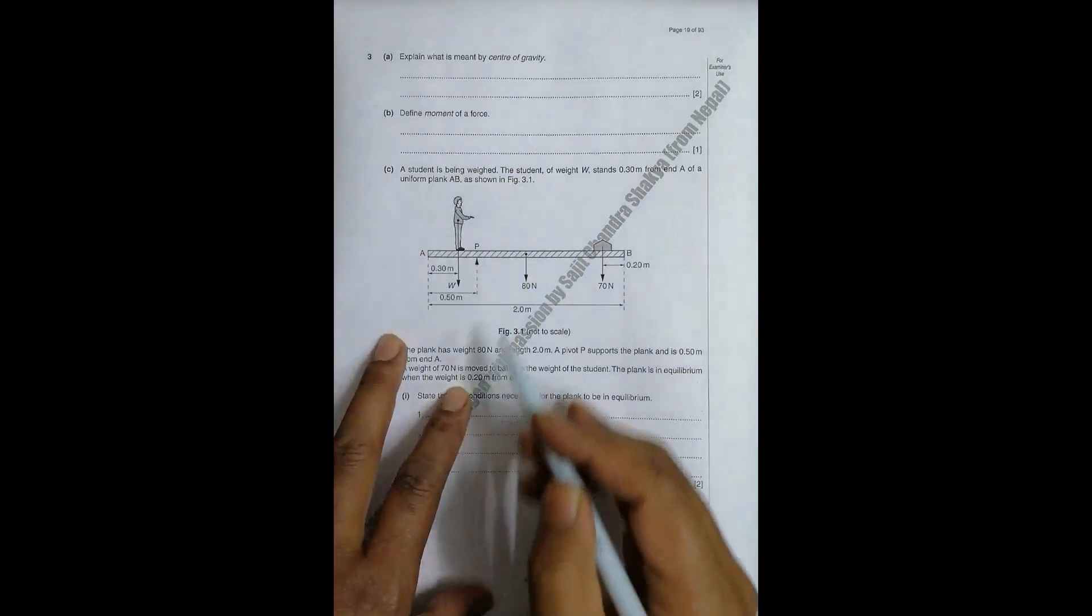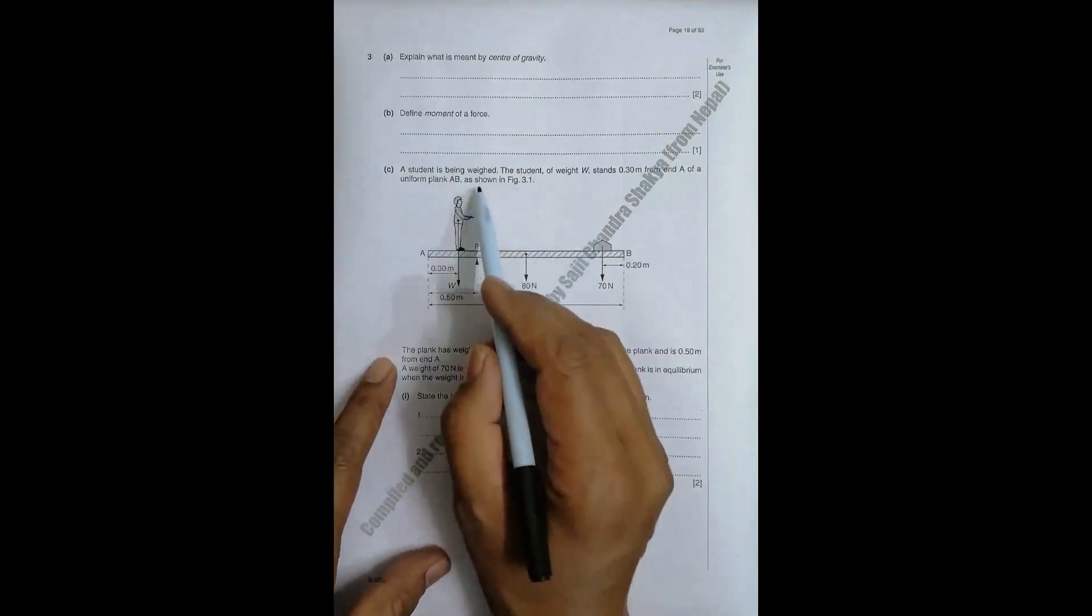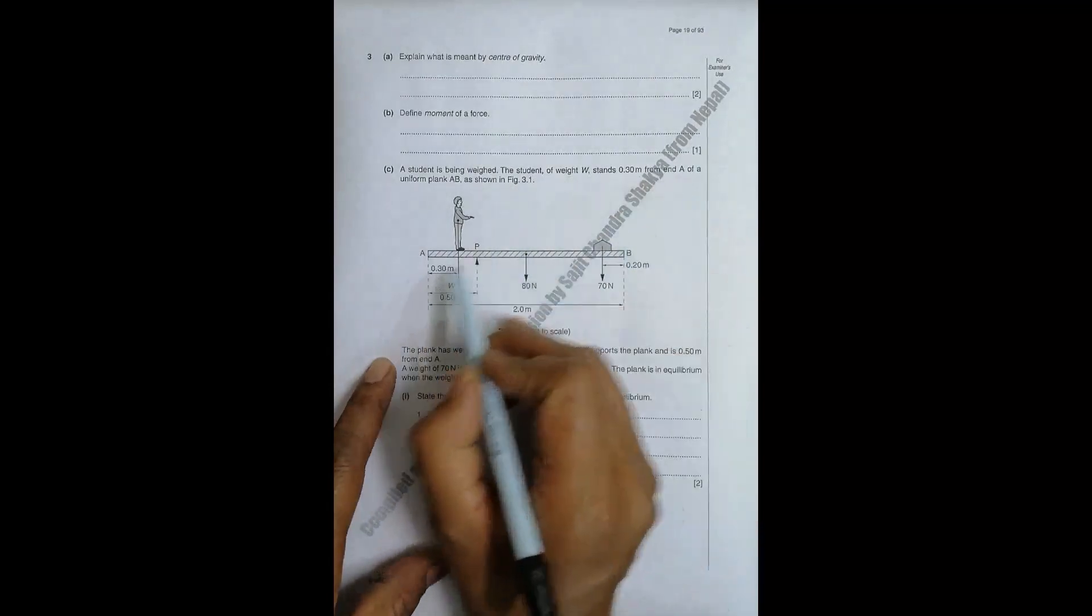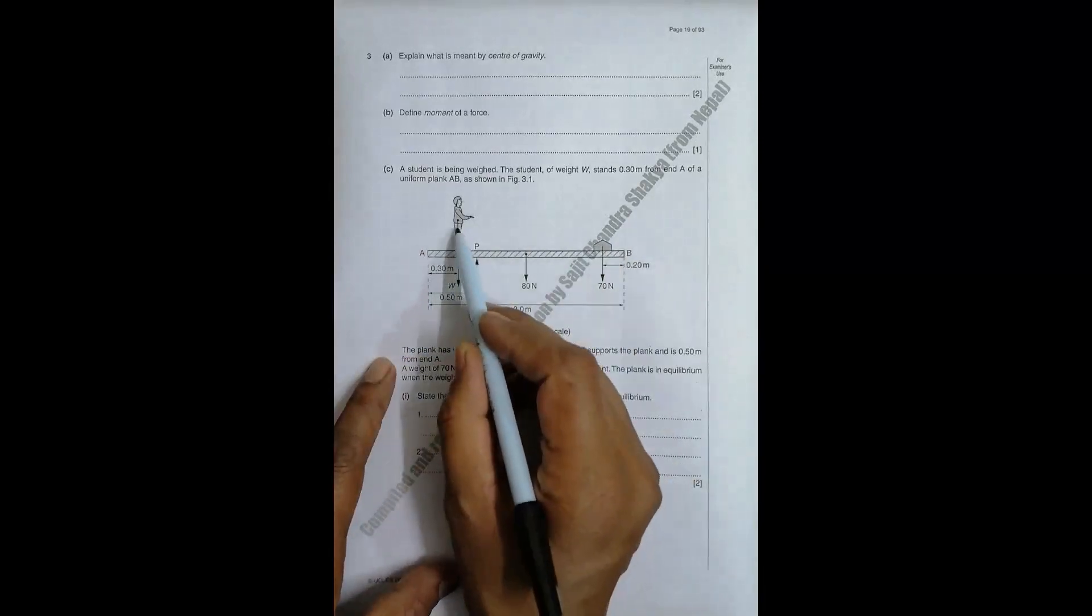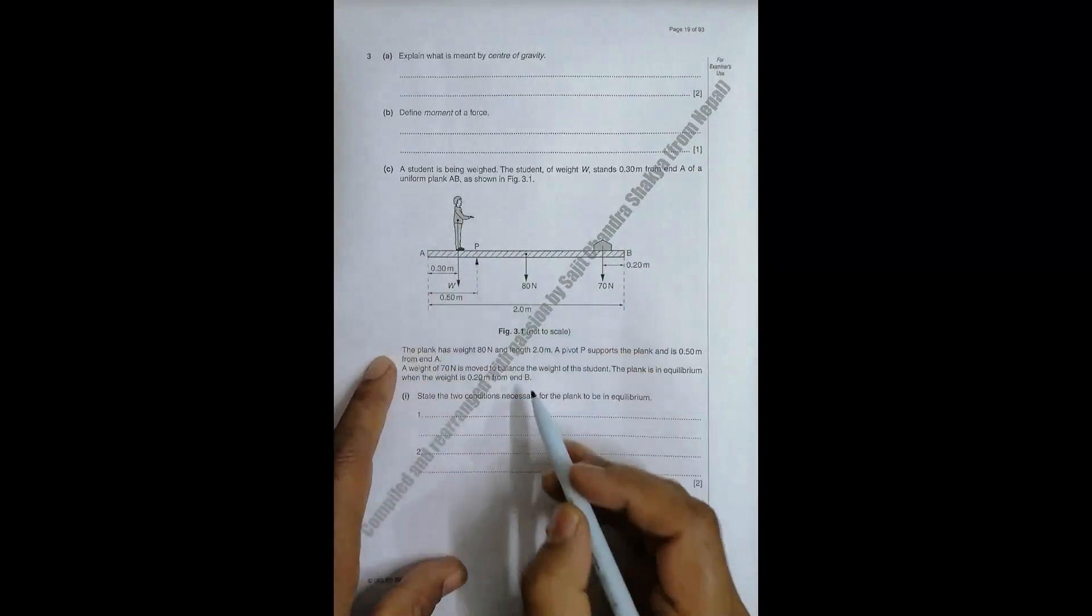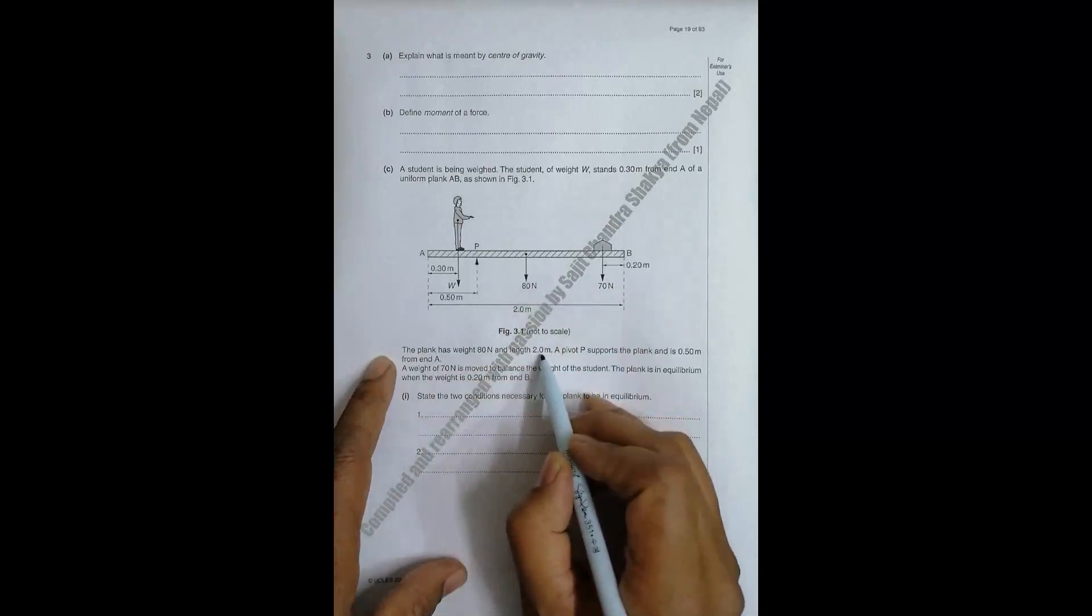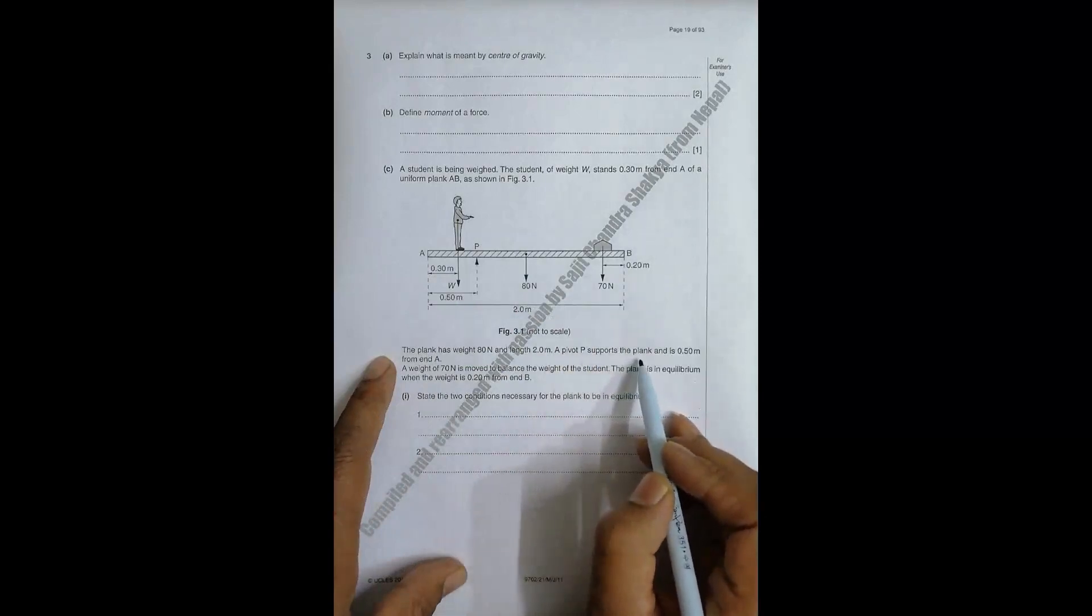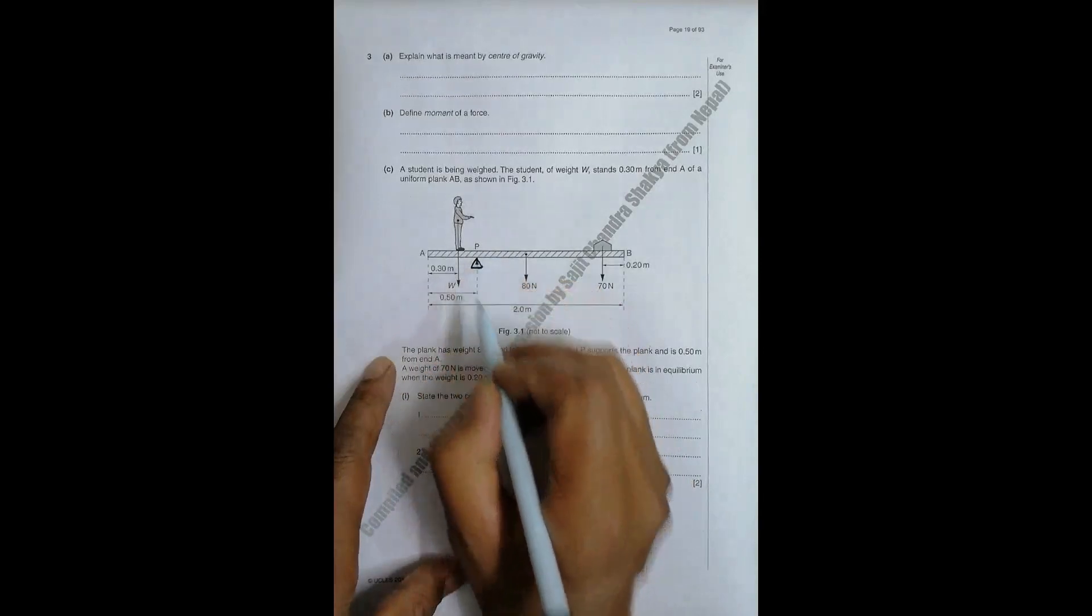Now in number C we have a student being weighed. The student of weight W stands 0.3 meter from end A of a uniform plank AB. The plank has weight 80 Newton and length 2.0 meters. A pivot P supports the plank. Let me do it like this, it makes things clearer.